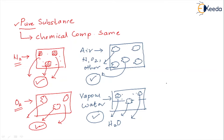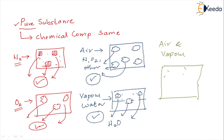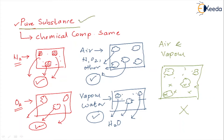Now can we say the same about a mixture of air and vapor? If we consider a mixture of air and vapor in the same space — say, vapor here and air elsewhere — taking samples at various places will show different chemical compositions. That is why a mixture of air and vapor cannot be considered a pure substance. So the key criterion is that samples taken anywhere must show the same chemical composition.